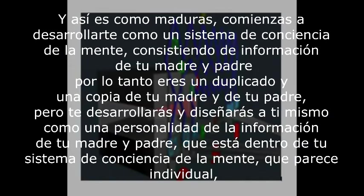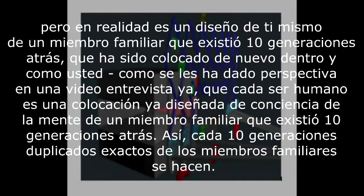That is how you as a mind consciousness system — consisting of information downloaded from your mother, which contains your father's information as well, and the generations that have gone before them — becomes alive. As you come of age, you start developing yourself as a mind consciousness system consisting of information from your mother and father. Thus, you are a duplicate and a copy of your mother and your father, developing a personality that seems individual, but is actually a design of a family member that existed ten generations back, placed again within and as you.